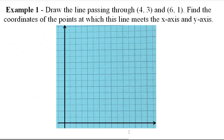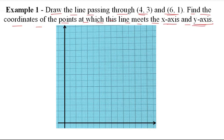So example number 1 is: draw the line passing through (4,3) and (6,1). Find the coordinates of the points at which this line meets the x-axis and y-axis. So first we have to plot a line from these two coordinates, then we have to draw the x-axis and y-axis.